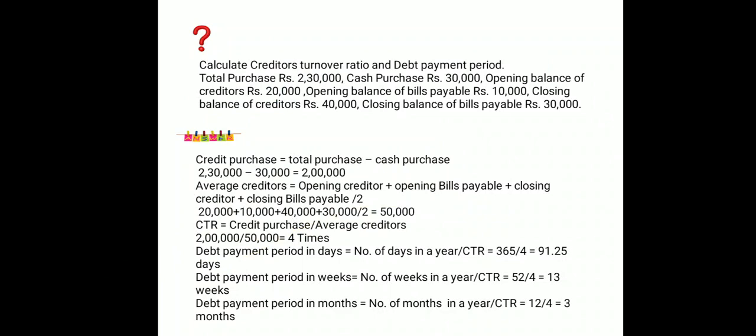Replacing values: Creditors Turnover Ratio = credit purchases 2,00,000 divided by average creditors 50,000 = 4 times.